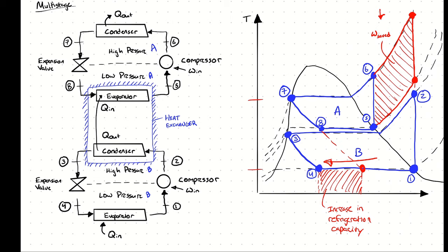Our total power input is the mass flow rate through cycle B multiplied by the specific work into cycle B — across the compressor from one to two — plus the mass flow rate through cycle A multiplied by the specific work into cycle A, which is the specific work into the compressor between five and six. The total rate of heat rejection from the cycle is just the condenser in cycle A. The total rate of heat absorbed by the cycle is the Q into evaporator B. We assume no work output terms.